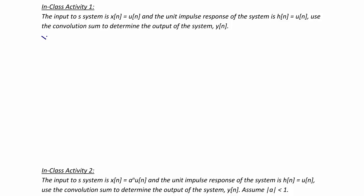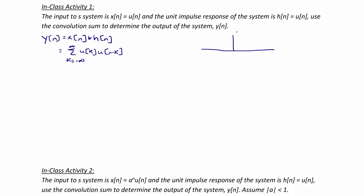What we have here is that y is equal to x convolved with h, or y is equal to the summation from k equal to negative infinity to infinity of u of k, u of n minus k. First, if we make a sketch of u of k, we know that it's 0 up to time 0 and then it's 1s.